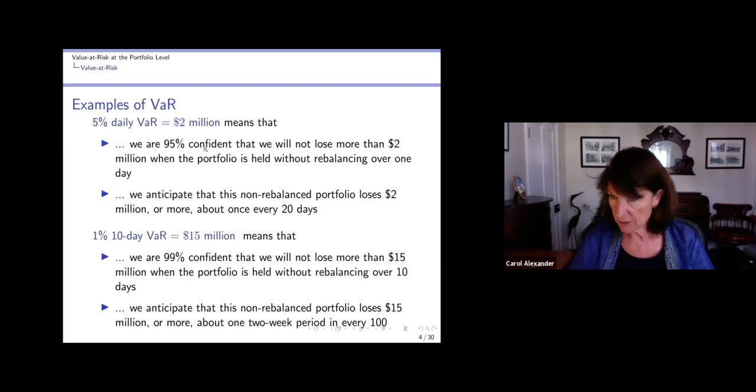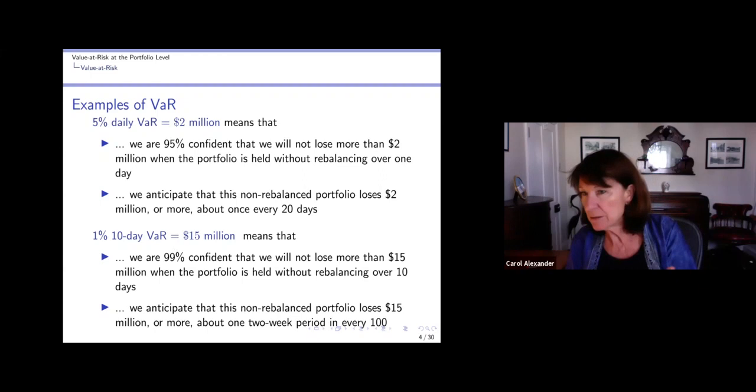So for example, if we have a 5% daily VaR of two million, that means that we're 95% confident that we'll not lose more than two million dollars when the portfolio is held without rebalancing over one day. And if it's a 1% 10-day VaR of 15 million, that means that we're 99% confident that we'd not lose more than 15 million dollars when the portfolio is not rebalanced for 10 days. Now when it comes to the confidence level, if we are 95% confident, that means that 5% of the time it will happen, or one out of twenty (5% is one over twenty). And similarly, if we're 99% confident, it means that 1%, or one over a hundred times, we would lose more than that. So for example, in this case, 95%, one in 20 days (because it's a daily VaR), one in 20 days we would lose more than two million dollars. And this is a 1% 10-day, that means one in 100 10-day periods (and 10 trading days, we don't count the weekends)—10 days in every 100 fortnights we would lose more than 15 million.